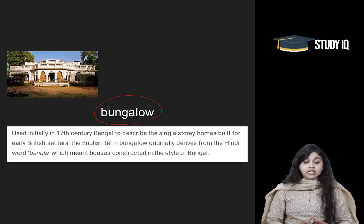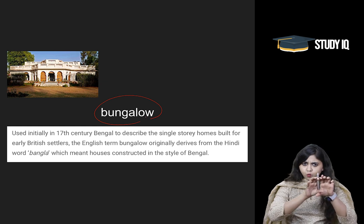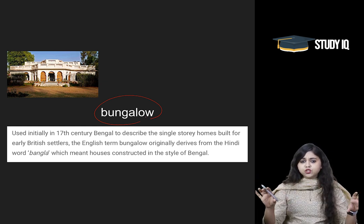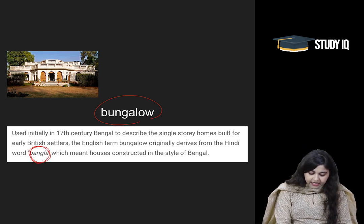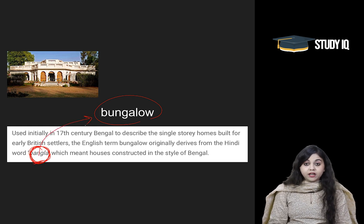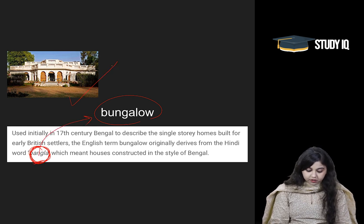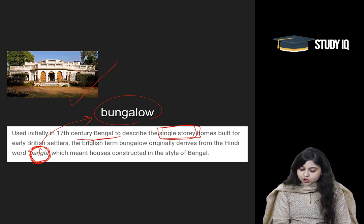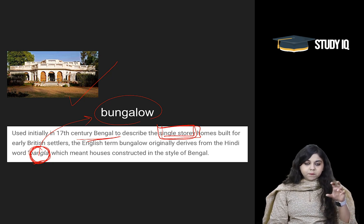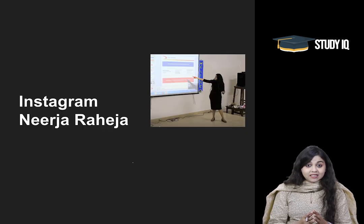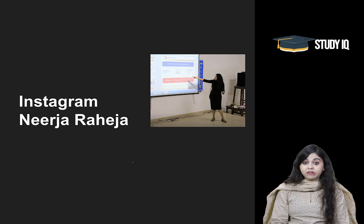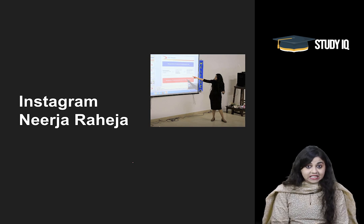'Bungalow' comes from the Hindi word 'bangla', meaning a single-storeyed house. These single-storeyed houses were built in the Bengali style, so they were called 'bangla', and from this Hindi word bangla came the word bungalow, as we can see in the image. It was used initially in the 17th century in Bengal to describe single-story homes constructed in the Bengali style.